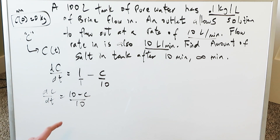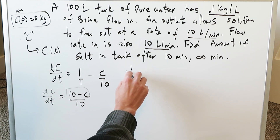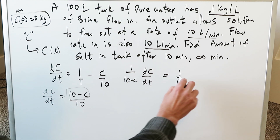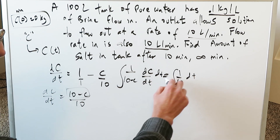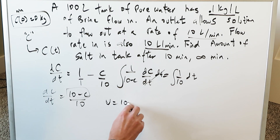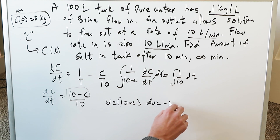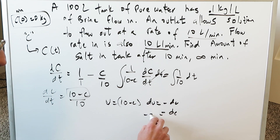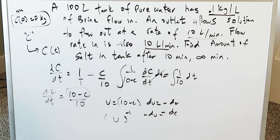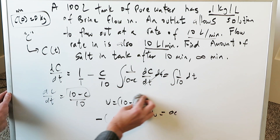Using separation of variables, rearrange to get all concentration terms on one side: 1/(10 - c) · dc/dt = 1/10. Integrate both sides with respect to t. For the left side, apply u-substitution: let u = 10 - c, then du = -dc, so dc = -du. The integrand (10 - c)^(-1) becomes u^(-1) in terms of u, and integration brings in a natural log.